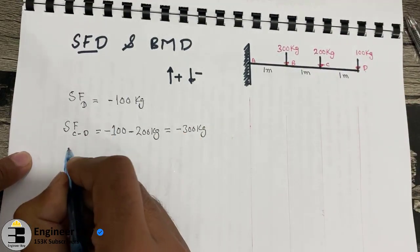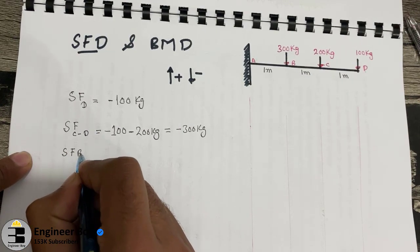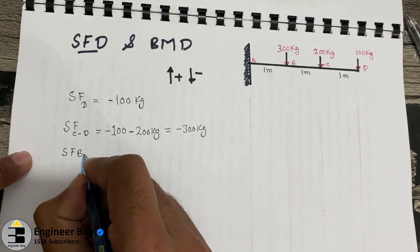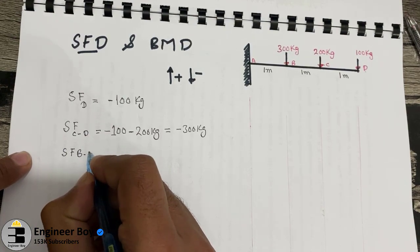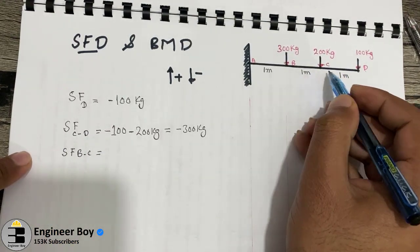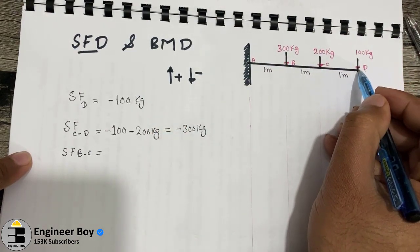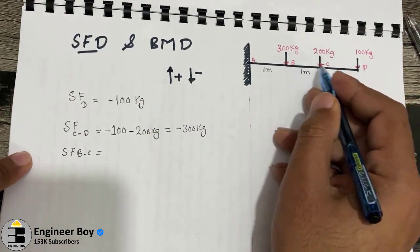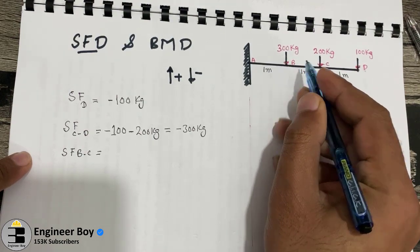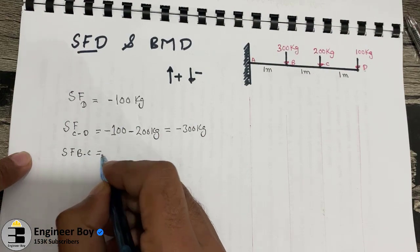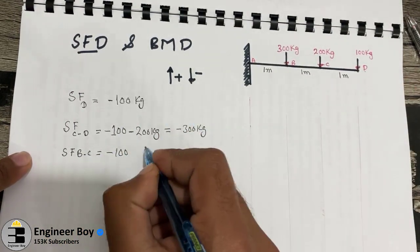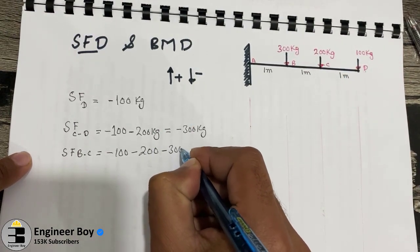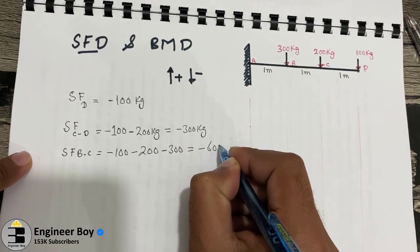Now for section C to D: we already have minus 100 kg from point D, and at point C there is an additional minus 200 kg. Adding these gives minus 300 kg, which is the shear force at section CD. For section B to C, we sum the forces at D, C, and B: minus 100, minus 200, and minus 300 kg, giving minus 600 kg.